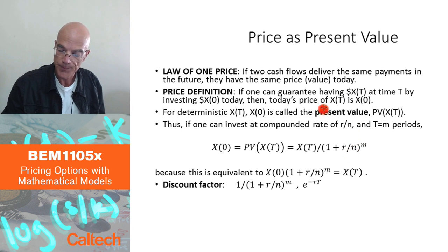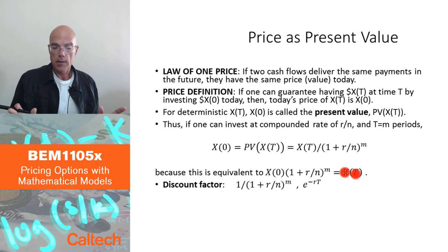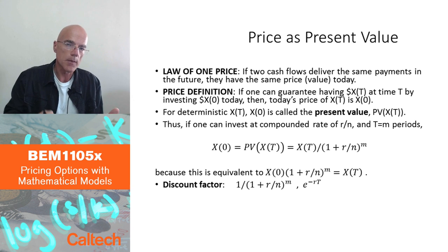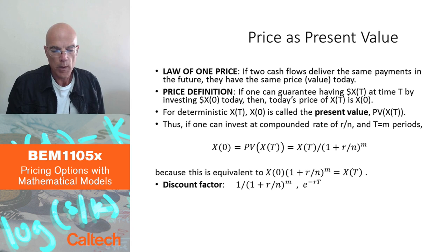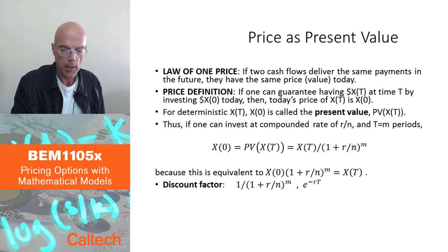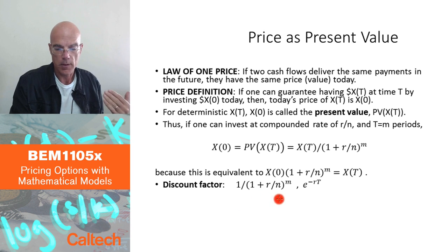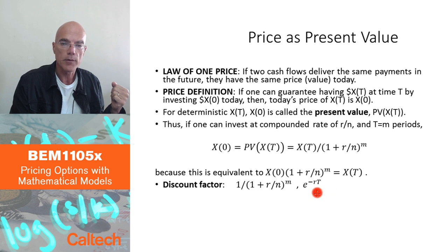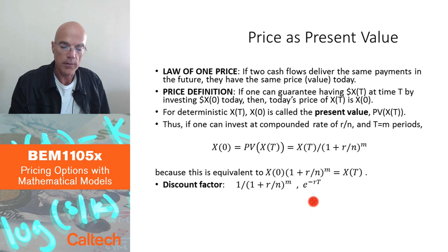The present value is simply the future value X(T) divided by the compounding factor — that tells us how much to invest today to have X(T) in the future. Dividing by (1 + r/n)^m is the same as multiplying by 1/(1 + r/n)^m, called the discount factor. In the continuous compounding case, the discount factor is e^(−rT).